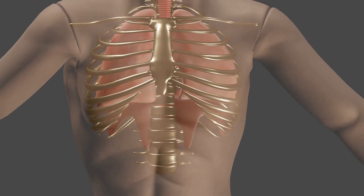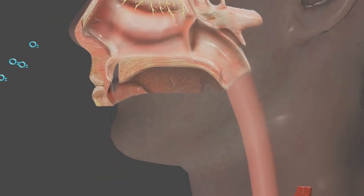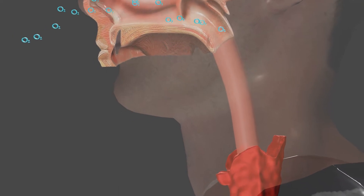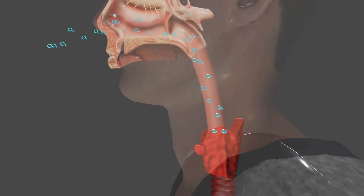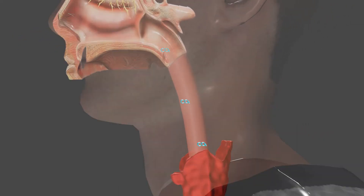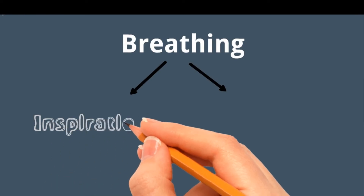Breathing is a process in which fresh air containing more oxygen is pumped into the lungs and air with more carbon dioxide is pumped out of the lungs. Breathing is a mechanical process consisting of two phases: inspiration and expiration.